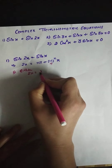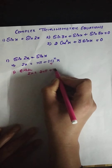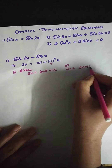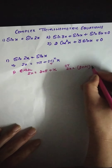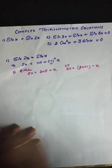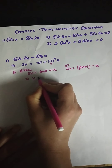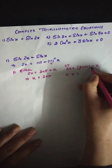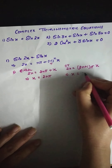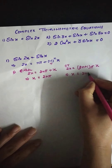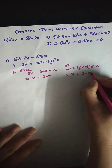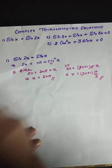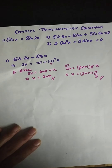Either 2x equals even π, which gives us 2nπ plus x, or 2x equals odd π — we can write that as (2n+1)π or (2n−1)π — with minus x. Simplifying these gives us x equals (2n+1)π, and x equals (2n+1)π over 3. So these are the two solutions for this complex trigonometric equation.